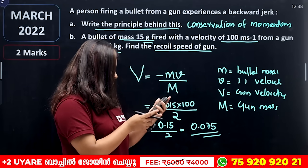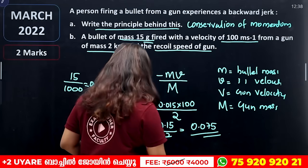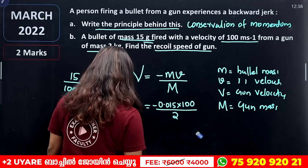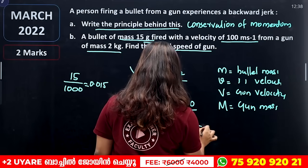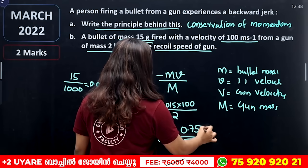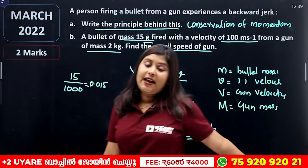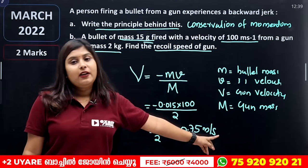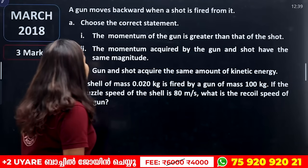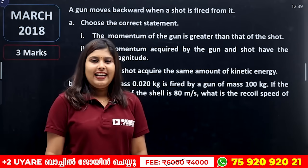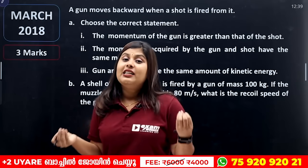0.015 into 100 gives 1.5, divided by 2 gives 0.75 meter per second. So the recoil velocity is 0.75 meter per second. That is when the bullet is fired and the gun recoils backward.